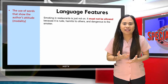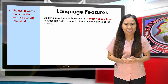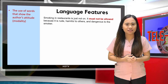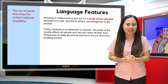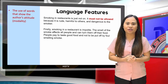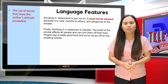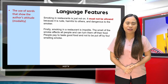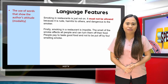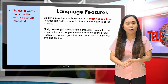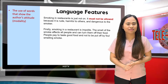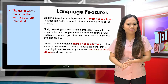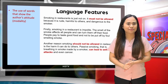Smoking in restaurants is just not on. It must not be allowed because it is rude, harmful to others, and dangerous to the smoker. Firstly, smoking in a restaurant is impolite. The smell of the smoke affects all people and can put them off their food. People pay to taste good food and not to be put off by foul-smelling smoke.